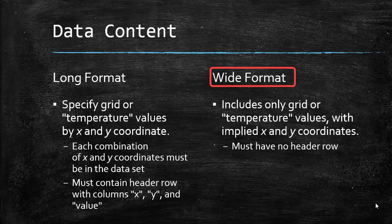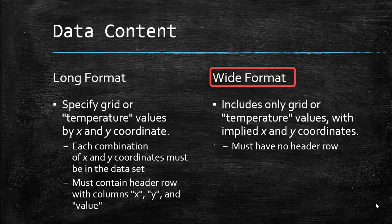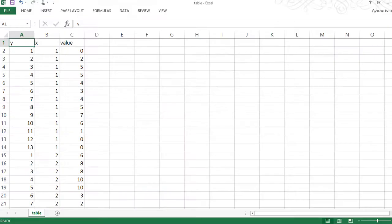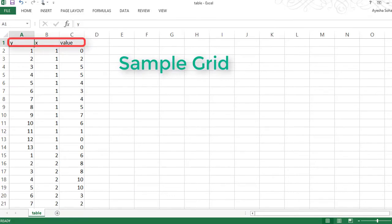The wide format, on the other hand, includes only grid values with implied X and Y coordinates. Values here are given as a matrix that's mapped onto the image, and this type of input doesn't require any header row. I have a sample file here that we can use to test out the program, and we can use this sample grid to superimpose on the image.